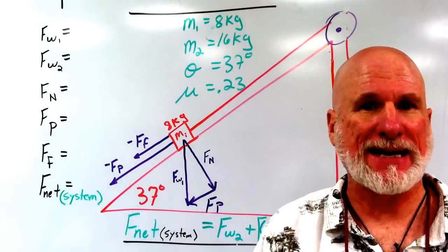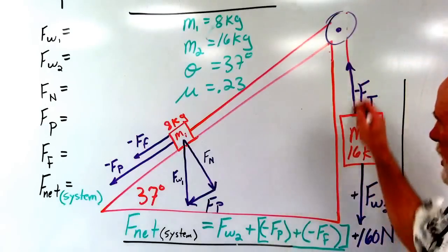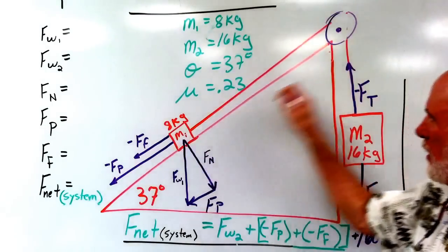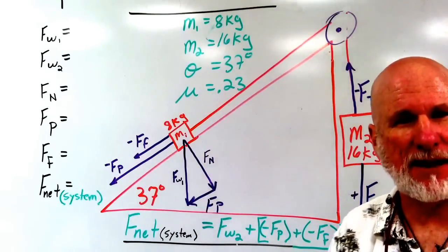M1 and M2 are connected, so they are a system. I need to know what my FT is. What's the tension in that line?